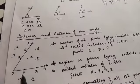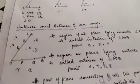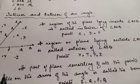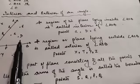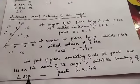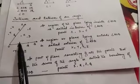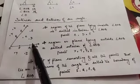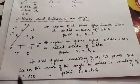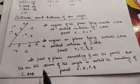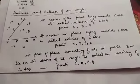Points S, R, P, Q are lying on the arms of the angle and this is called the boundary of angle AOB. The part of the plane consisting of all the points that lie on the arms of the angle is called the boundary of angle AOB. So S, R, P, Q are the points that lie on the boundary.